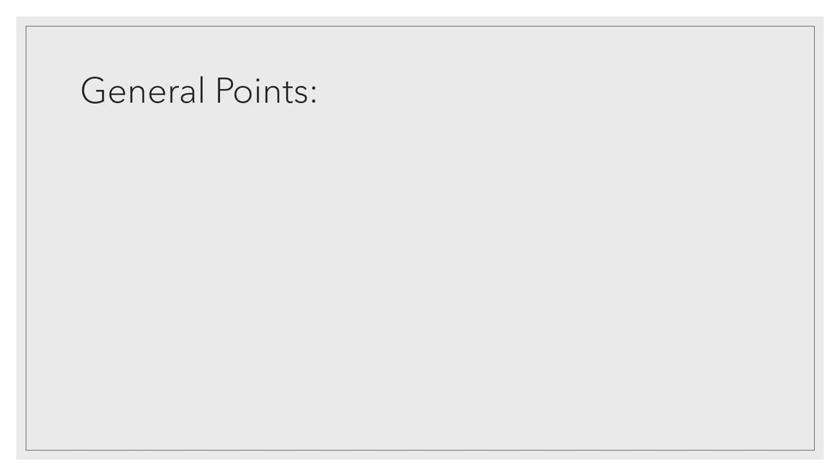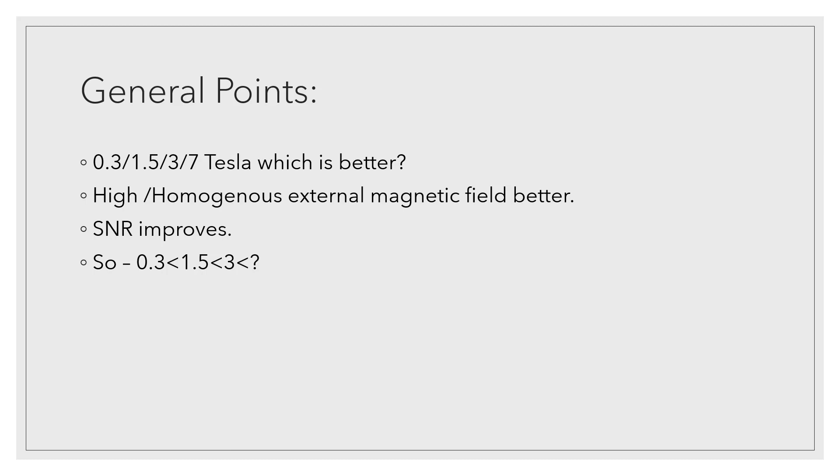General points, these are like factoids. Of course, which is better? Seven Tesla is better, but more than the field strength, homogeneity is the most important factor. You will have a better image, better data, better histogram in a 1.5 Tesla with homogeneous field rather than a 3 Tesla with an inhomogeneous field. Just remember that. But higher Tesla will improve the signal-to-noise ratios. Previously 0.3T is the least, 1.5T is better, and 3T is better than 1.5T. 0.3 will have the least signal-to-noise ratio.